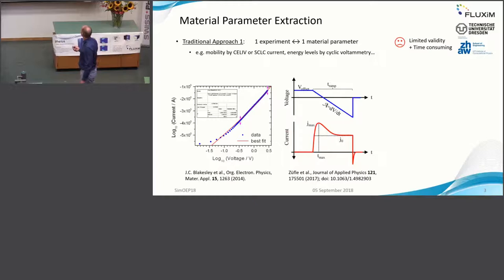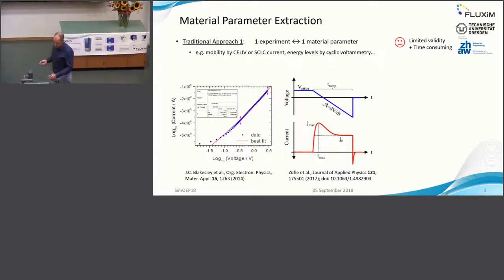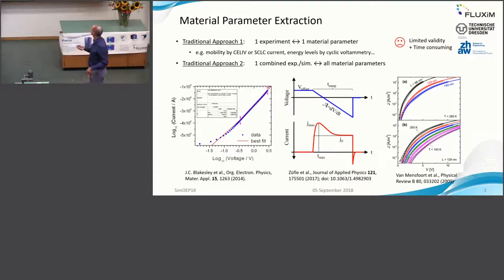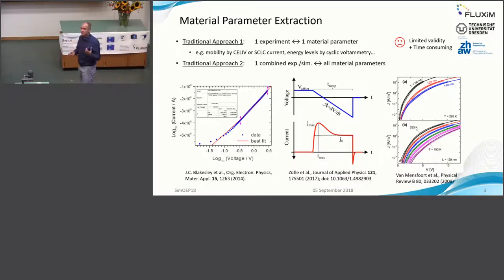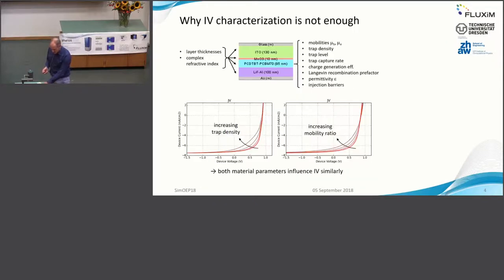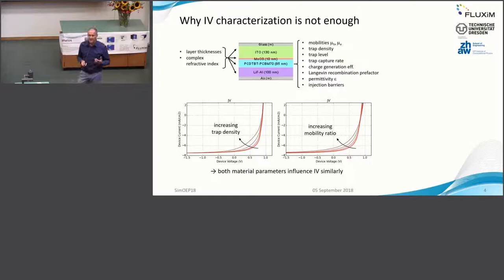With only one kind of experiment, for each you can get just one parameter that reproduces that one experiment. Of course, people have extended this traditional approach using numerical modeling and combined, for instance, multiple JV curves for different temperatures and devices of different layer thickness, achieving a nice fit across all these curves. But this is still limited to just one experimental technique — JV curves — and the parameters extracted are still strongly correlated because the data is based on only one technique.